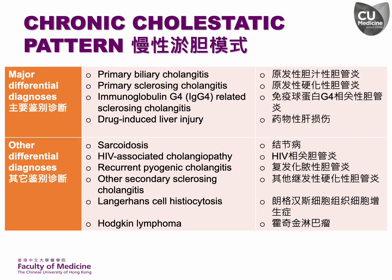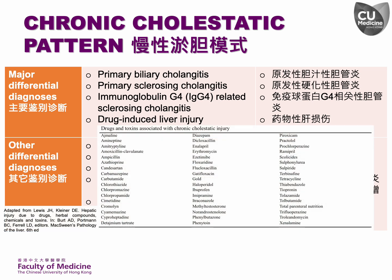The major and common considerations for the chronic cholestatic pattern are primary biliary cholangiitis, primary sclerosing cholangiitis, IgG4-related sclerosing cholangiitis, and drug-induced liver injury. This table lists various drugs and toxins associated with the chronic cholestatic pattern. Many of these are also linked to the acute cholestatic hepatitis pattern.